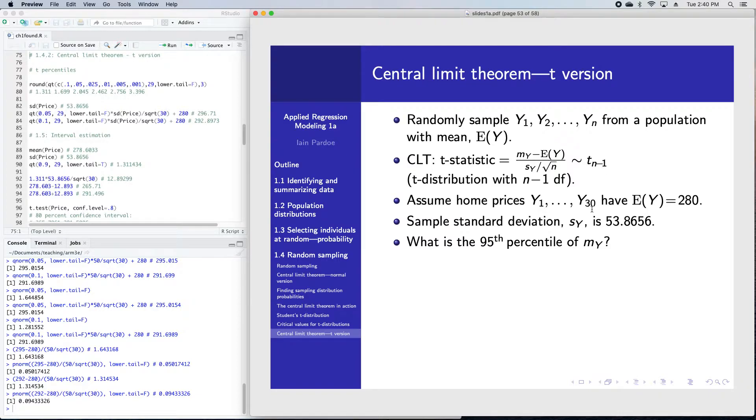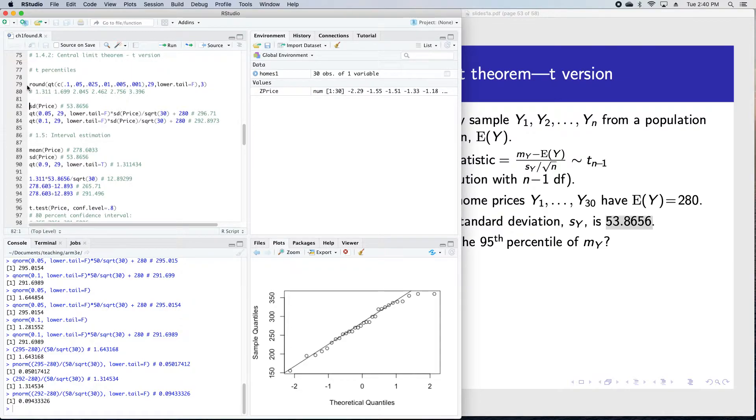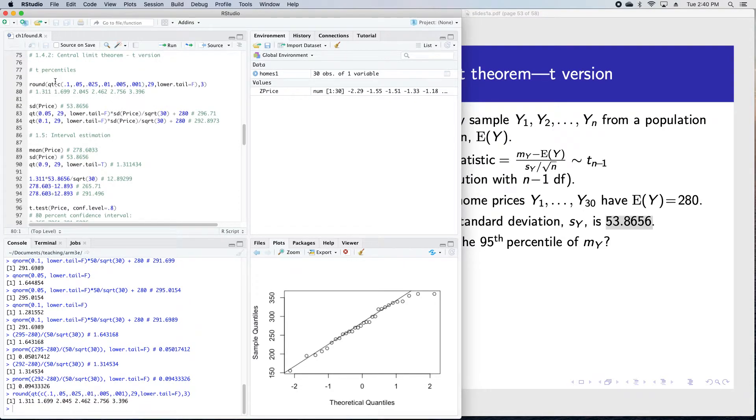Let's use our home prices example and assume that we're sampling our home prices from a population with a mean of 280. We can calculate the sample standard deviation. Let me show you that over in R. Incidentally, you can replicate those numbers in the t-table using the qt function here.